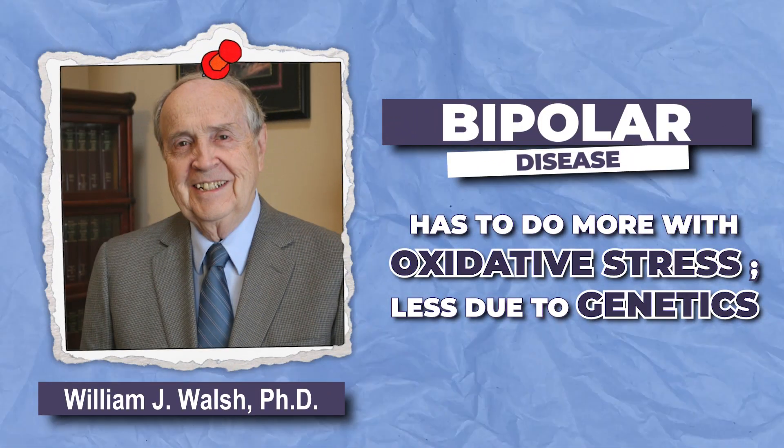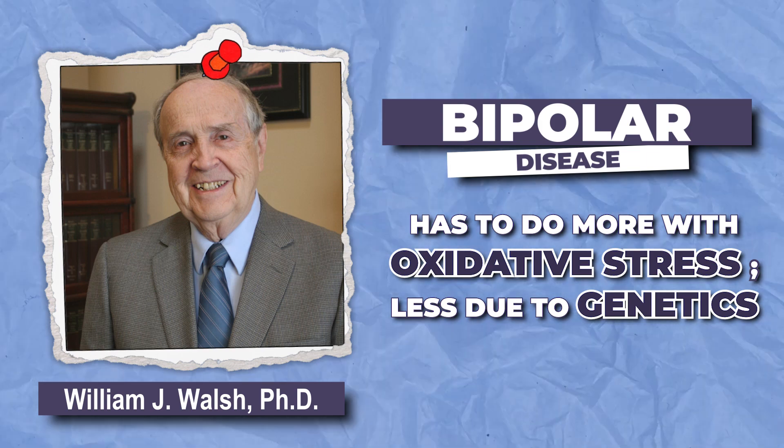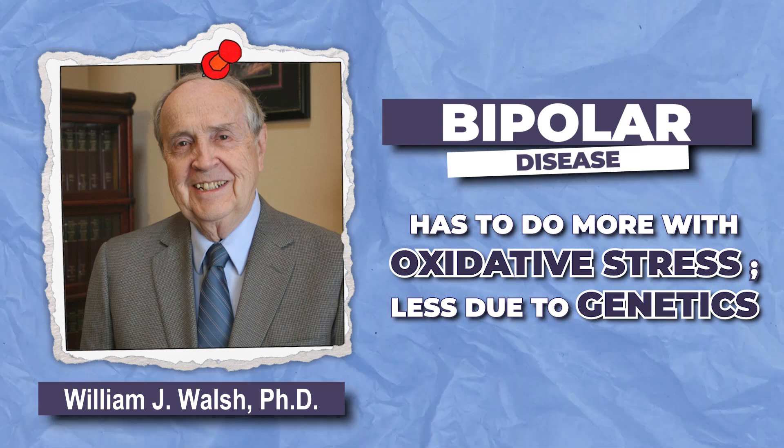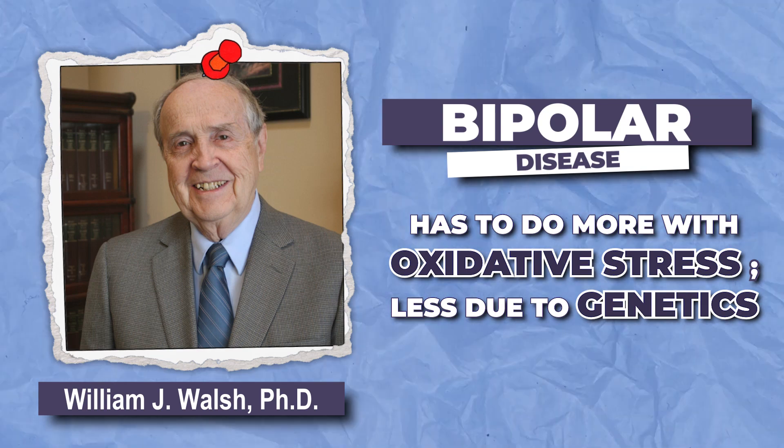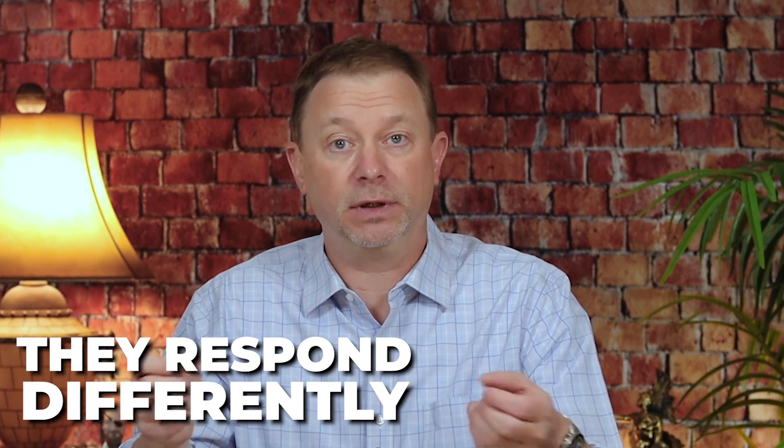Oxidative stress ages molecules by changing electron movements, affecting protons — which are hydrogen ions — and changing membranes, making them inefficient. It causes all kinds of problems and is very much implicated in cancer of all types and in bipolar disease. William Walsh has talked about spending the last seven years studying bipolar disease and believes it has to do with oxidative stress across populations, and is less due to genetics.